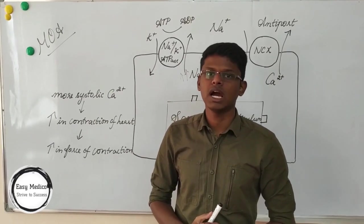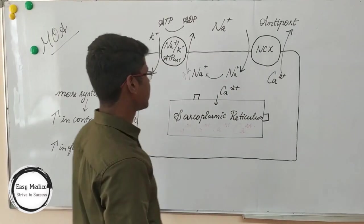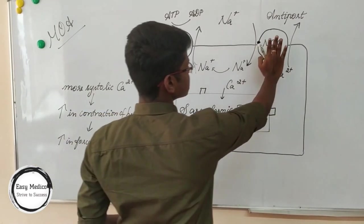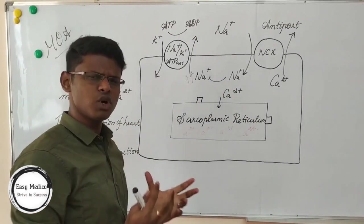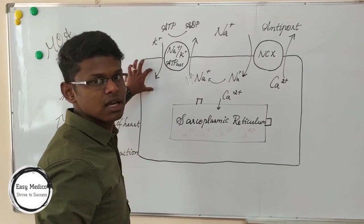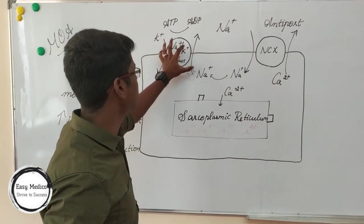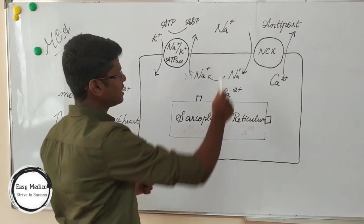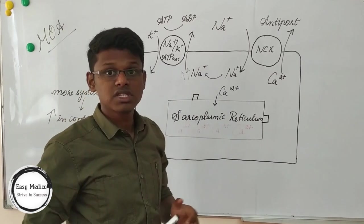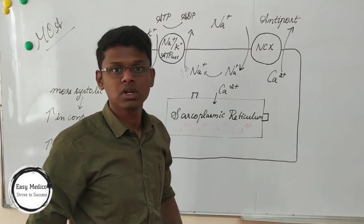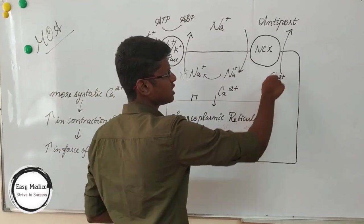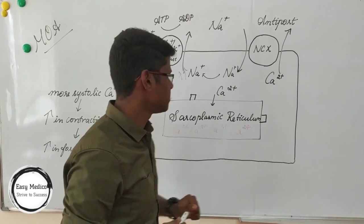To understand the action of cardiac glycosides, we will study the mechanism of action. Here is a typical structure of a myofibre. There are two channels: one is the sodium-potassium ATPase, and another is the NCX. The function of sodium-potassium ATPase is to take potassium from the extracellular space into the cell, and to send sodium from intracellular to extracellular space. This in turn causes an increase in intracellular sodium levels, which triggers the NCX channel — an antiporter that gets triggered by changes in sodium levels — causing calcium to move out to the extracellular space.